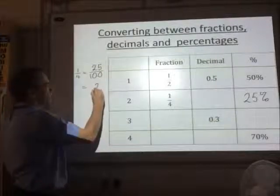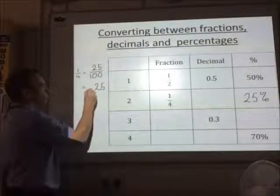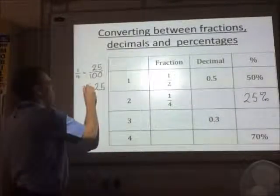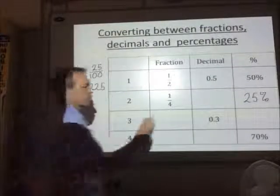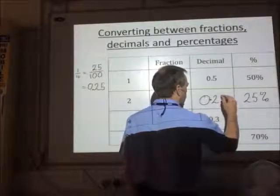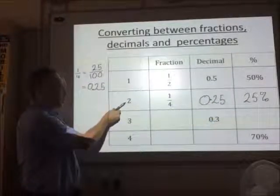So there's my 25, and I'm moving the decimal point. So when I divide 25 by 100, I end up with 0.25. So 0.25. So that's row number 2 complete.